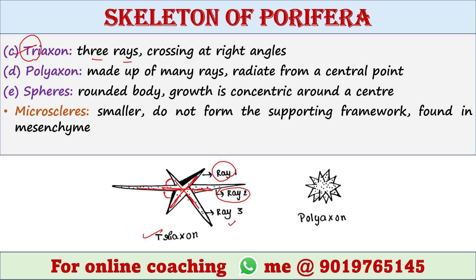Next is polyaxon. Poly means many. This type of spicule is made up of many rays all radiating from a central point. Next type is sphere, which is a rounded body in which growth is concentric around a center — growth occurs outward around this central point. All of these come under megascleres.